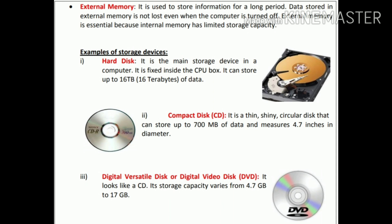The most important main external storage device is the hard disk. It is the main storage device in the computer, fixed inside the CPU box. It can store up to 16 terabytes of data. So if you put a hard disk inside the CPU and the 16 terabyte data is finished, you can remove it and install a new hard disk. It is external in the sense that you can remove it and replace it. So how much data can it store? 16 terabytes of data.